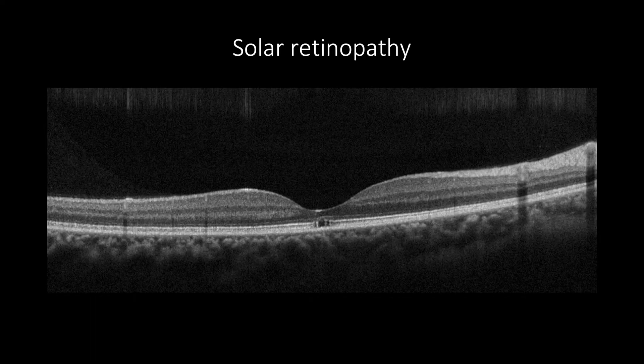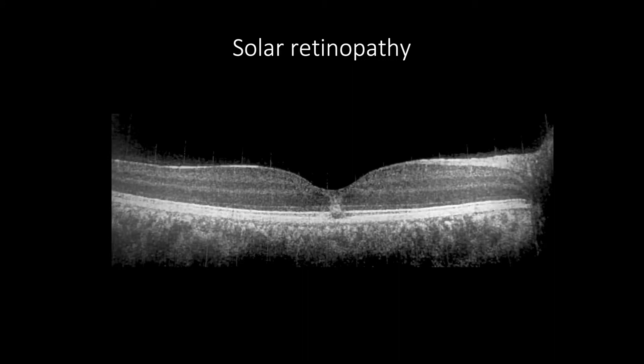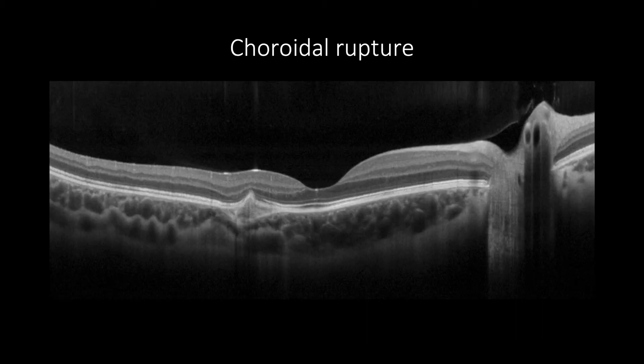Solar retinopathy can be presented with a focal disruption in the ellipsoid zone and outer retinal tissues, with intact other retinal tissues without any changes in retinal contours. However, in acute cases, it may show increased reflectivity over the focal disruption due to inflammatory tissue reaction. Choroidal rupture may show choriocapillaris, RPE protrusion, and pyramid-shaped changes causing discontinuity of RPE.